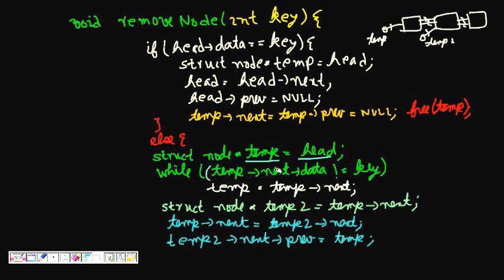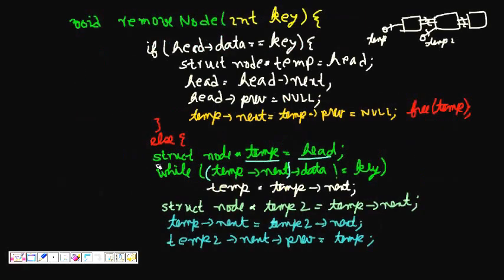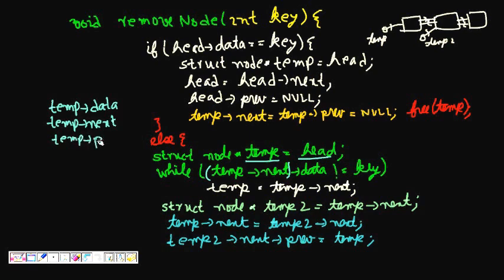Now we have to check which node has the data, so we use a while loop. temp->next is basically the pointer to the next element. To access the data of any node we use temp->data. So if temp is a pointer, temp->data gives us the data of that node, temp->next gives us the pointer to the next node, and temp->prev gives us the pointer to the previous node.